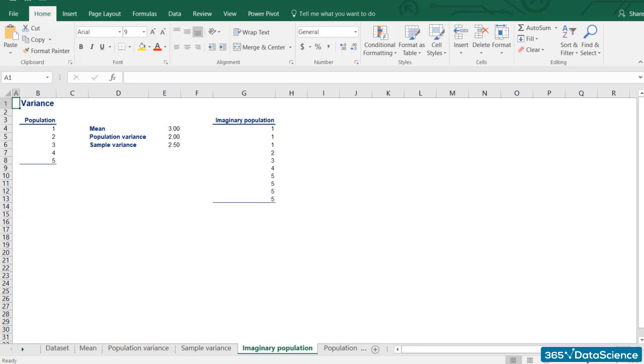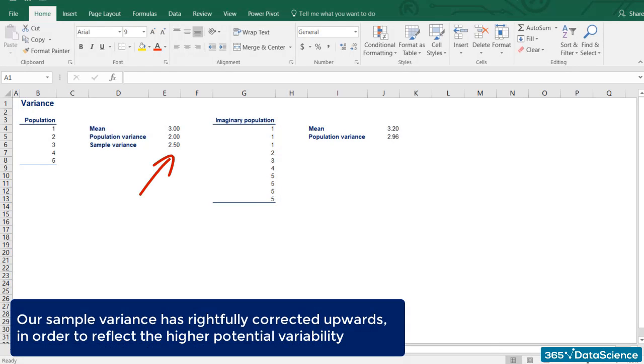Clearly, the numbers are the same, but there is a concentration around the two extremes of the dataset, 1 and 5. The variance of this population is 2.96. So, our sample variance has rightfully corrected upwards in order to reflect the higher potential variability.